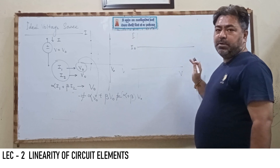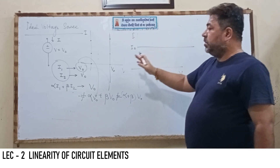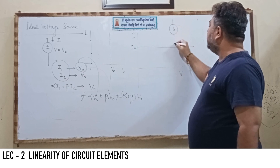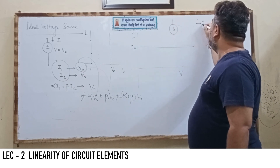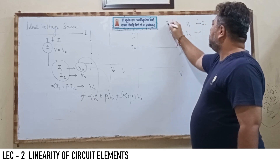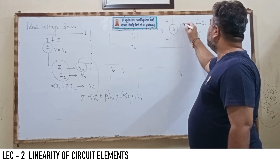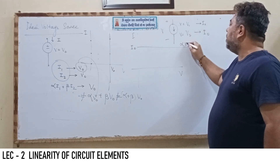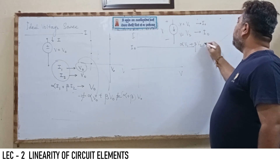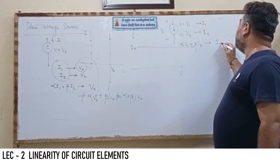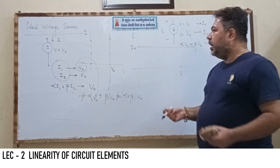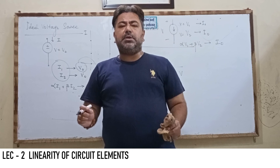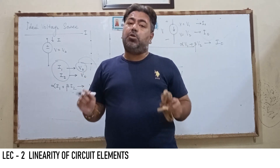Similarly, the current source does not follow the linear combination characteristic. If current source gives current I0 when voltage is V1, and also gives I0 when voltage is V2, then when voltage is alpha·V1 + beta·V2, the current is still I0 — not the linear combination of those currents. Therefore, voltage source and current source do not follow the property of linearity, but resistance, inductance, and capacitance do follow linearity in circuit theory.